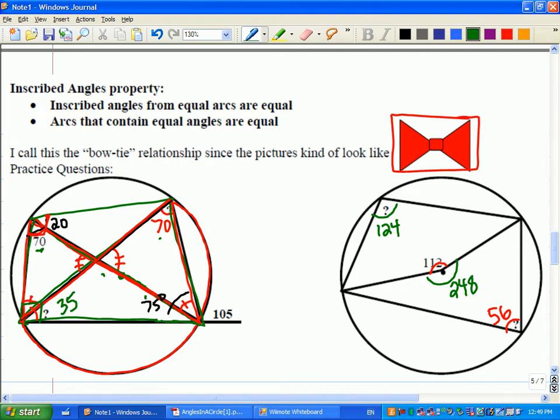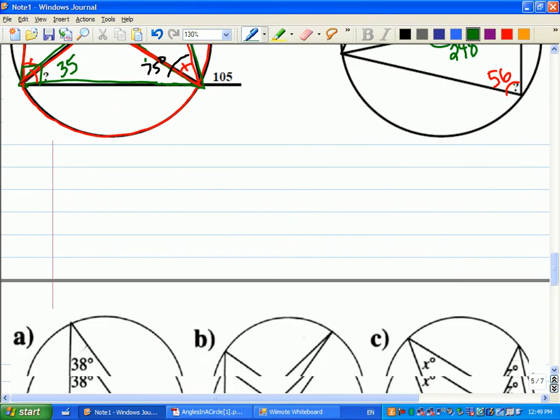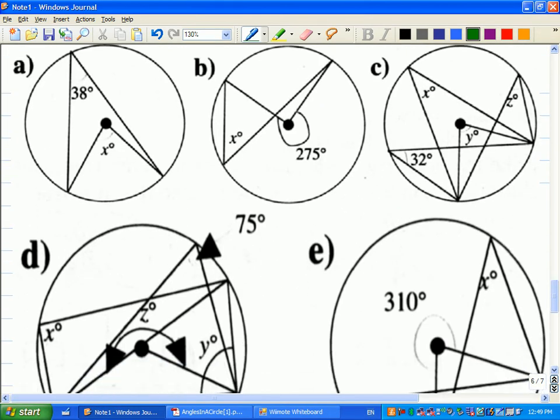Can I verify that? Yes, okay. I'm not so confident on my arithmetic today, so I appreciate the double checking. Okay, so we'll try a couple here before we get into the homework. Let's try A, it's easy. Yeah, there you go, 76. All you have to do is double the inscribed angle.